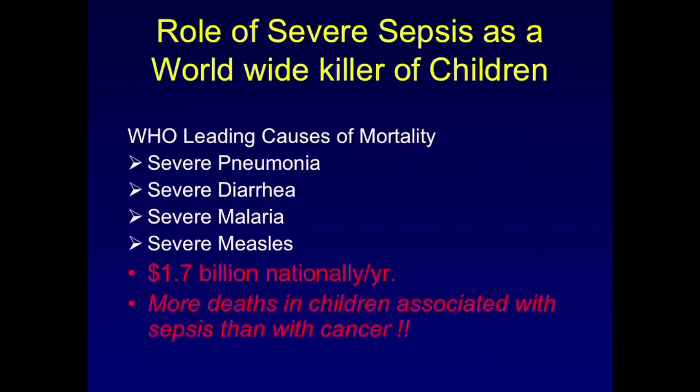So if you look at the World Health Organization, when they look at stats in children under five, it turns out that sepsis is the leading killer worldwide. So if you look at these diseases, pneumonia, diarrhea, malaria, measles, they respond with a 40% improvement in mortality with antibiotics. This comes to $1.7 billion nationally per year. There are actually more deaths in children than cancer.